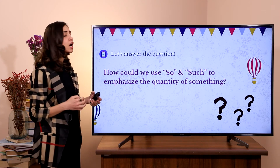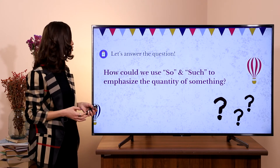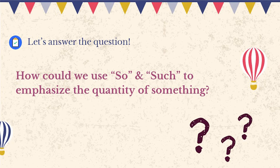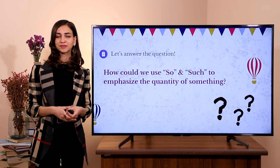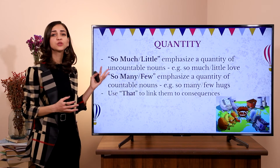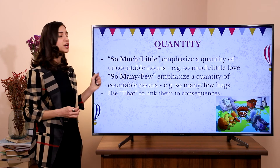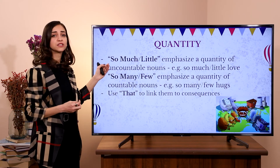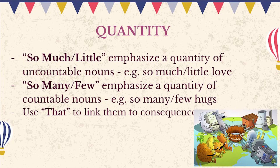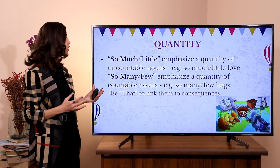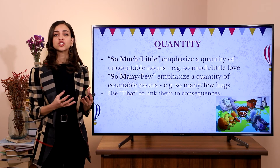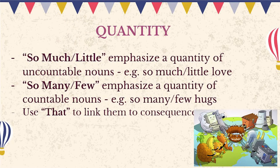The next question is: how could we use 'so' and 'such' to emphasize the quantity of something? We can use so much and so little, which emphasize a quantity of uncountable nouns — for example: 'so much love', 'so little love'. So many and so few emphasize a quantity of countable nouns — for example: 'so many books', 'so few books'. And we can use 'that' to link them to consequences.